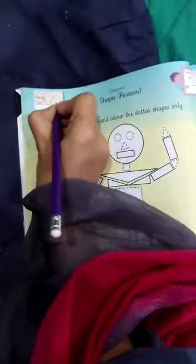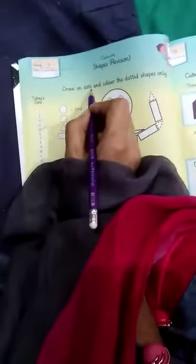और आज हम सबसे पहले डेट लगाएंगे 5th May 2020. यहां पे 5th पे टिक लगा लेंगे. लिखा हुआ है, draw on dots and color the dotted shapes only.